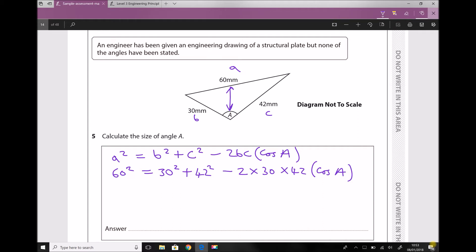Let's simplify what we have here. 60 squared is 3600.